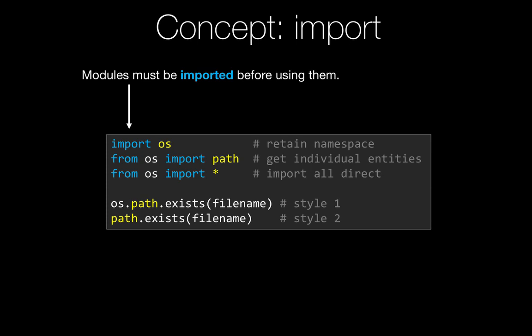We saw there's three ways that we can import — there's actually more than that, but I think this is enough to get us started. We can say import name of the package or module, and that both allows and requires us to maintain the namespace down below. You can see OS dot path that exists.